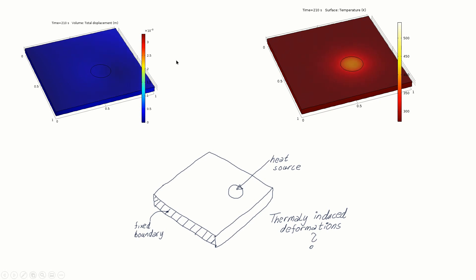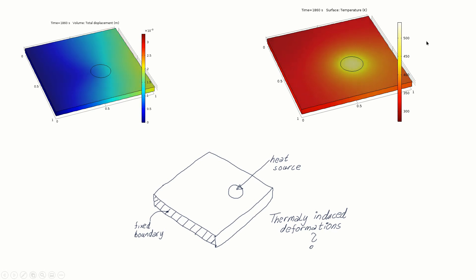In this video we will learn how to simulate thermally induced deformations of a plate using COMSOL Multiphysics. Here is the system setup: we are assuming a plate and on the top surface there is a heat source of 6,000 watts. This is an animation of thermally induced deformations and surface temperature distribution. The time constants are relatively long due to heat transfer inside the material — basically due to heat conduction.